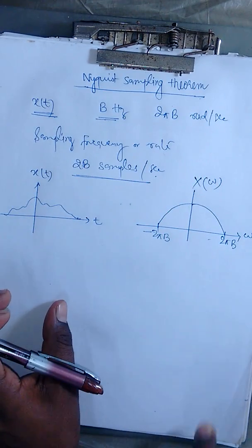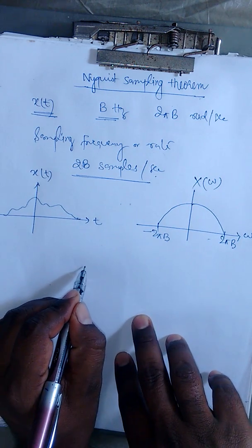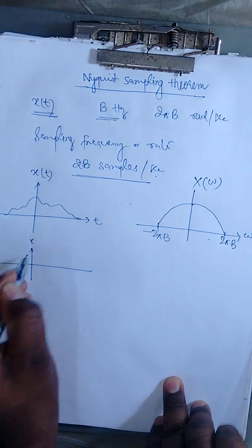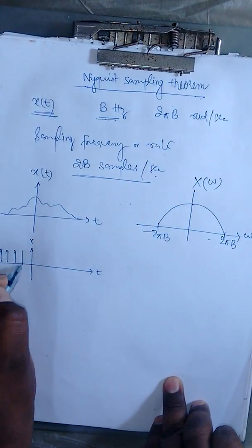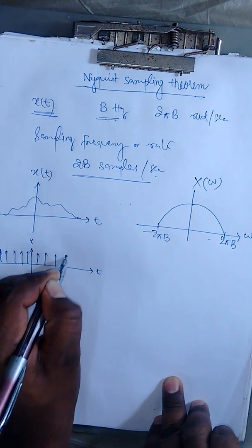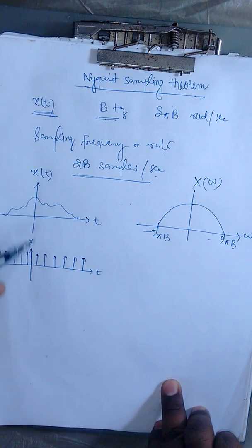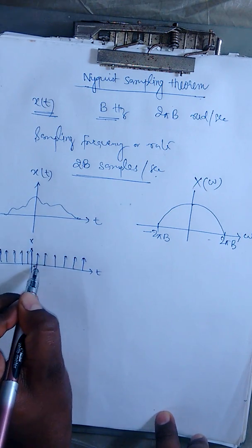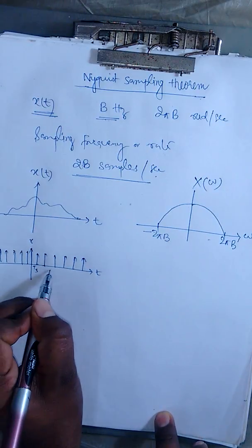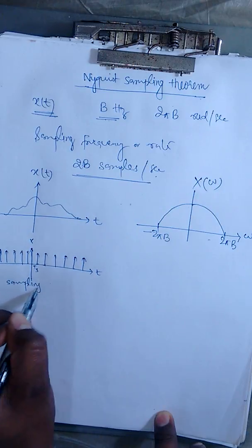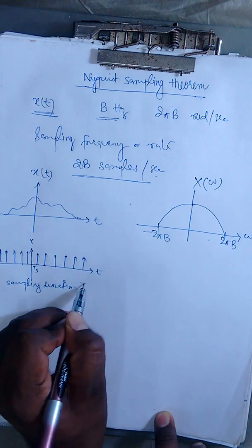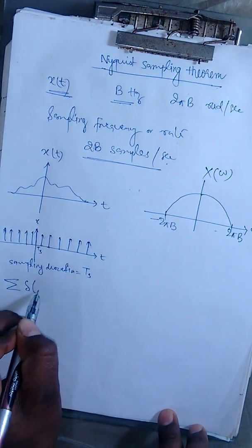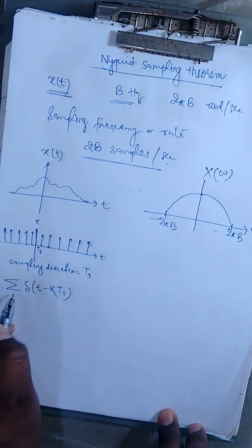Now we want to sample this time domain signal. To sample the signal, we must multiply it by an impulse train. If we multiply these two kinds of signals, we get samples of the original signal. Suppose the sampling duration is T_s — the distance between consecutive impulses. So the sampling duration equals T_s.